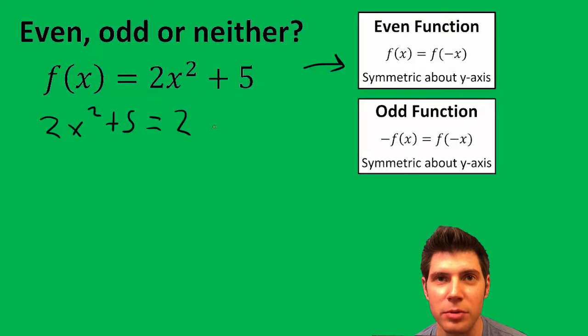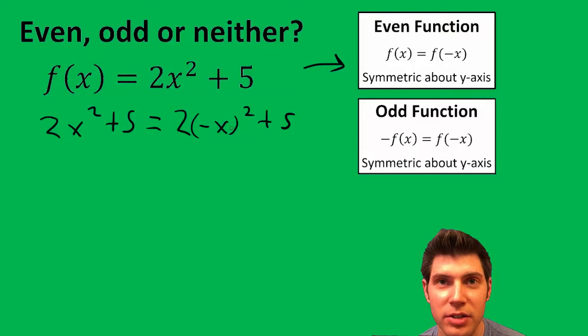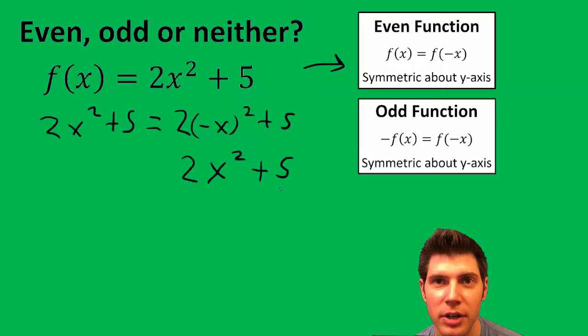So instead of 2x squared, it's going to be 2 times negative x squared plus 5. Now negative x times negative x is actually positive x squared because the negatives cancel, and you have the 2 there and the 5, and these two sides of the equation match.